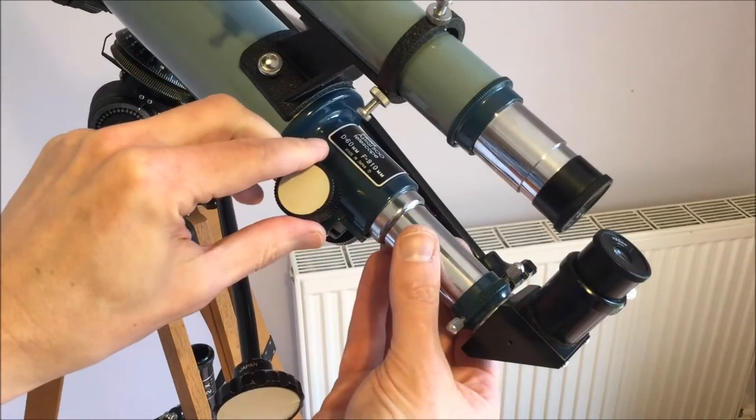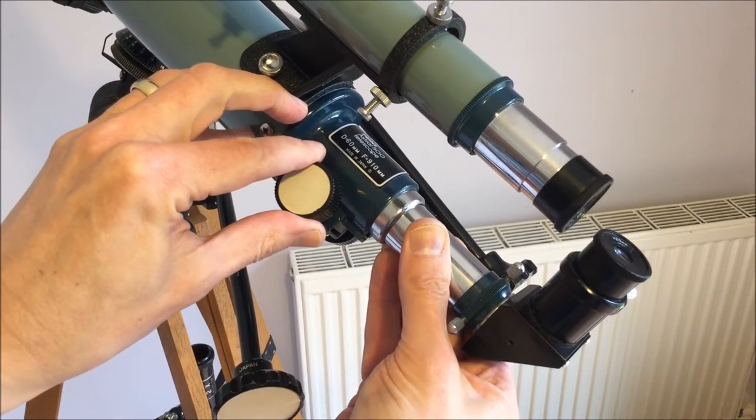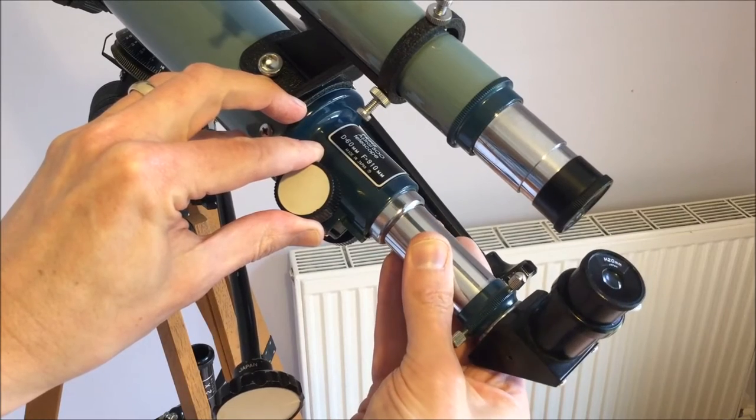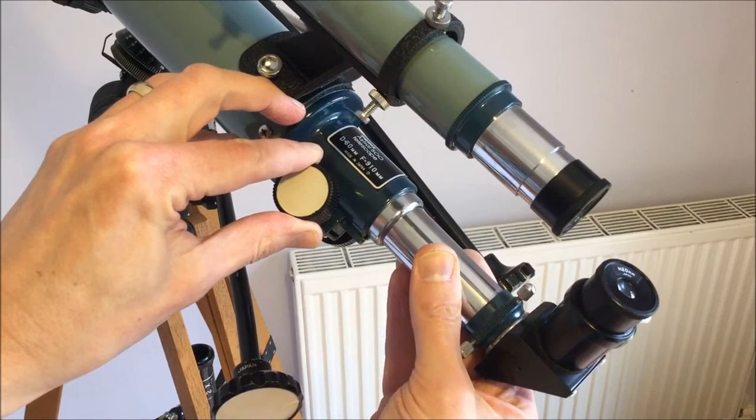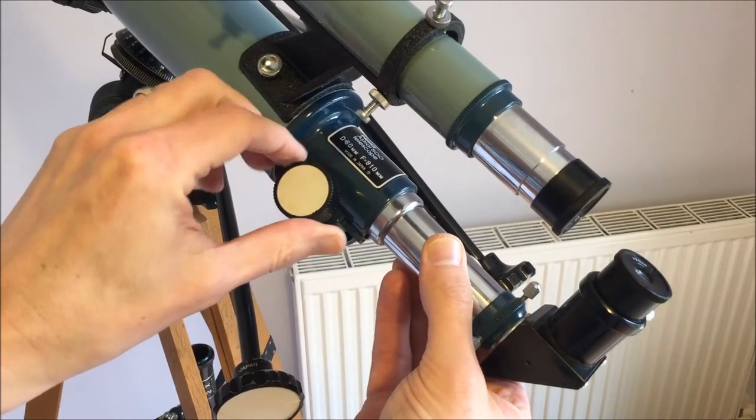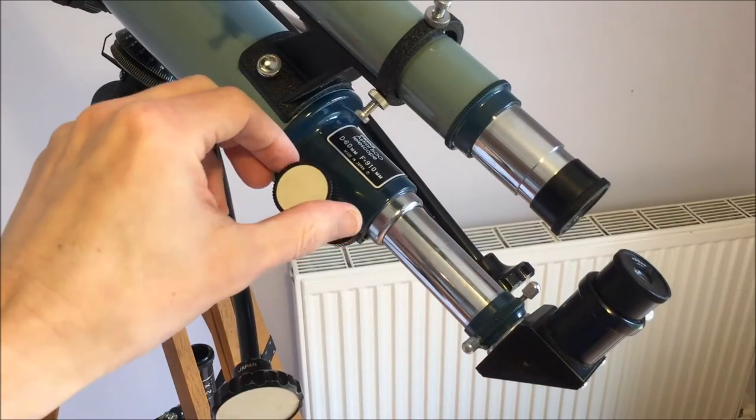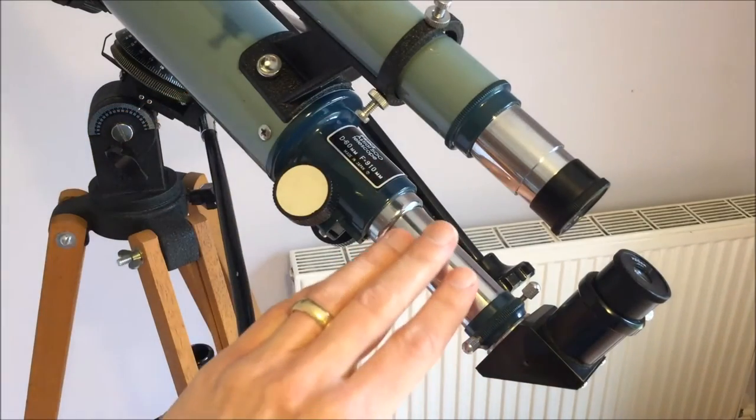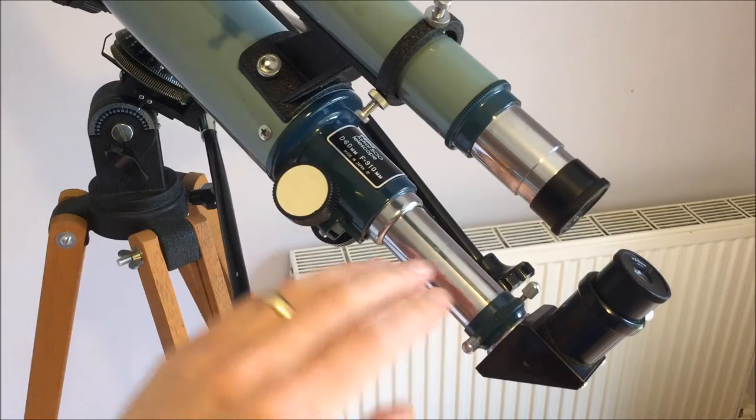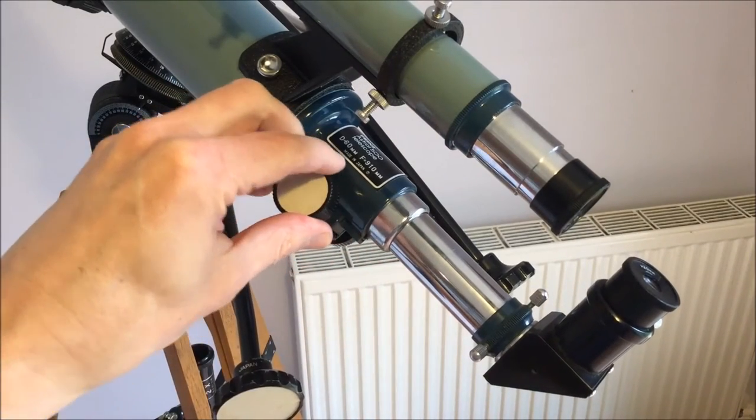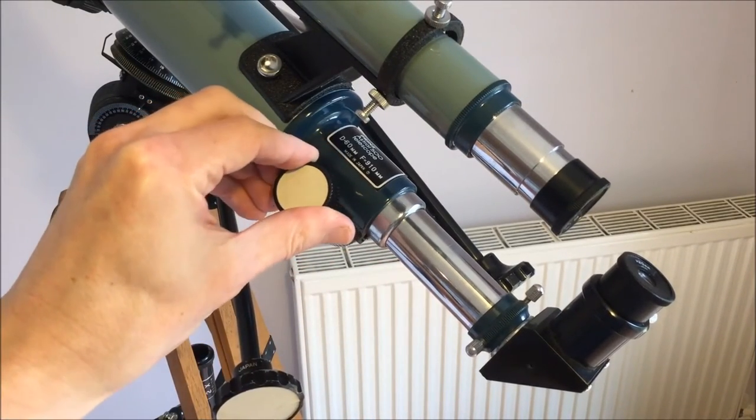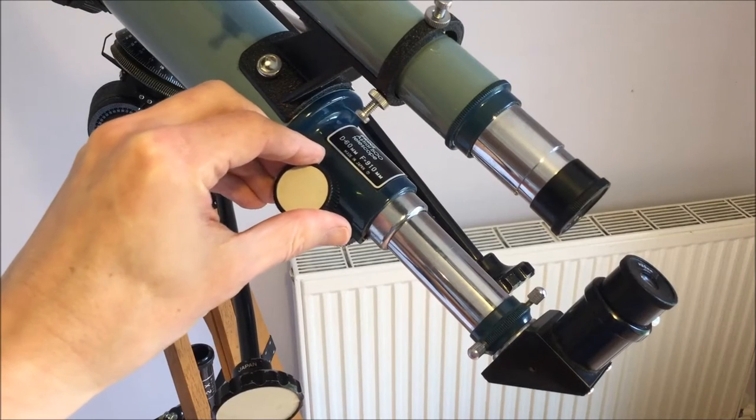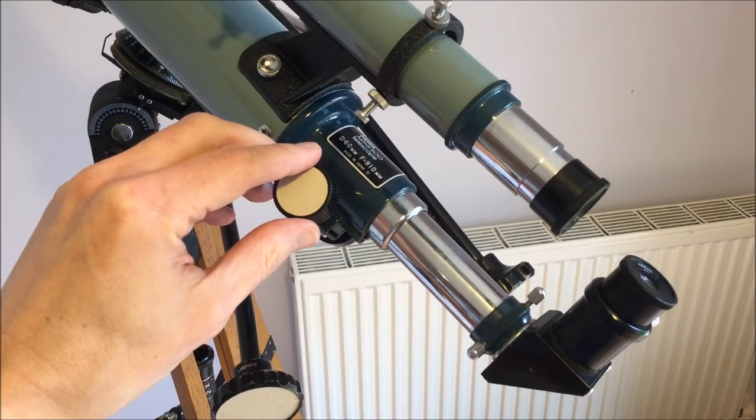So in order to ensure you can always reach focus, you can slide the draw tube in and out as well. So in practice, you find a coarse focus by moving the draw tube in and out, and then a fine focus in the standard way with the focusing knob. After a while, you get used to this and it works pretty well.